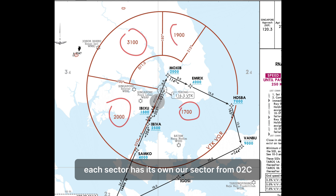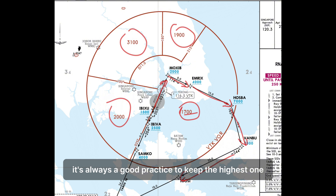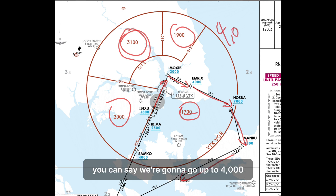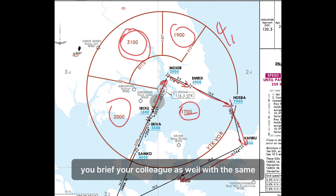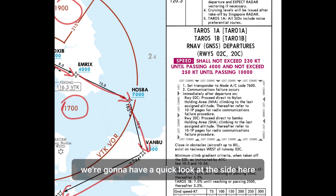Moving into the chart itself, looking at the MSA. Each sector has its own altitude — our sector from zero to center, we're going to be departing this way, around and off we go, so it's 1700 for us. However, it's always good practice to keep the highest one in mind, which is 3100, and in case you lose situational awareness for any reason, you can go up to 4000. Make sure you brief your colleague with the same information.